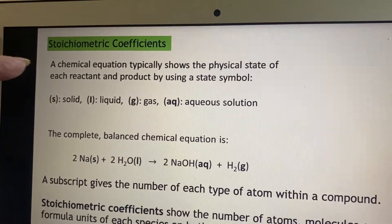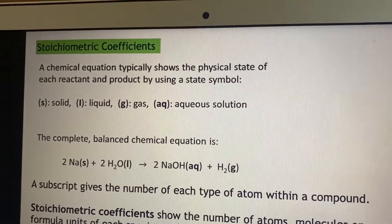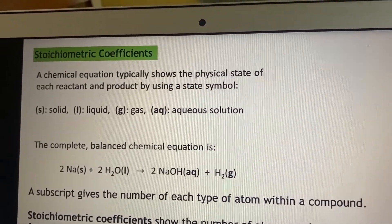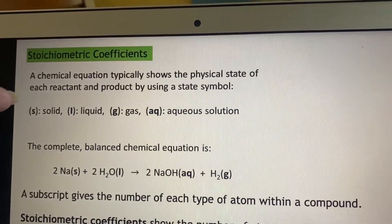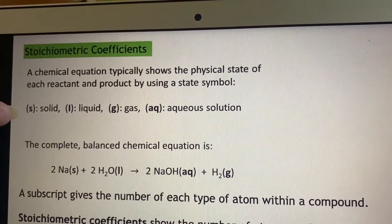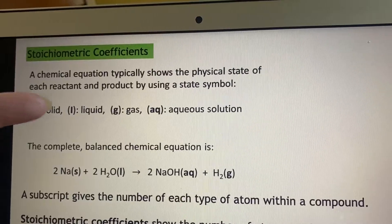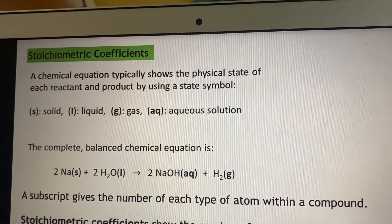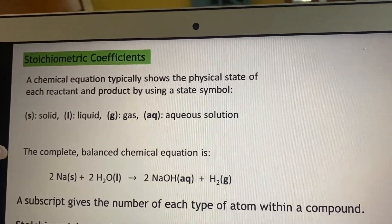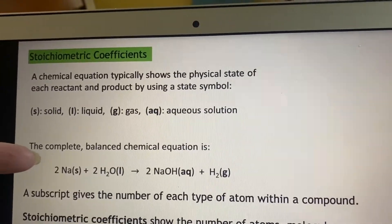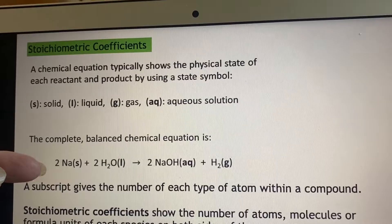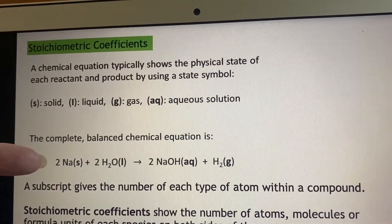Stoichiometric coefficients are going to be what helps us balance the equation so that we know how much of each thing there is. We're going to go ahead and use what we had mentioned before: the solid, liquid, gas, and aqueous to describe the state of each of these chemicals. And here is the equation that we had, only now it is balanced.